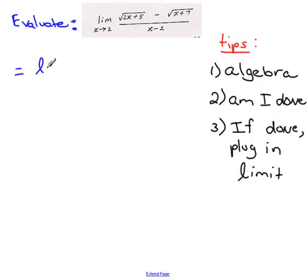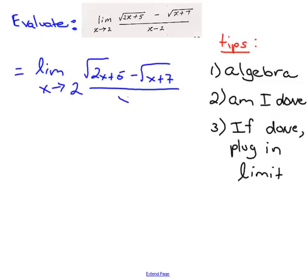So, in this question, you have to always write the limit as x approaches whatever number it is. In this case, it's 2. So, for the sake of this question, I'm not always going to write it. I'll just put quotations to show you guys that you should write it every time. So, here, I'm going to rewrite the question. Root 2x plus 5 minus root x plus 7 and all of that is being divided by x minus 2.